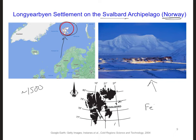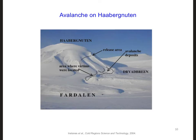On February 4th, 2001, two people traveling on snowmobiles between two settlements on Svalbard were reported missing just south of Langerbyen. Due to a lack of witnesses, winter darkness, and bad weather conditions, it wasn't until February 5th that Search and Rescue located an area with snowmobile tracks going into an avalanche area, but not coming out of it. This avalanche occurred on the east slope of the mountain Habergnoten, about 10 kilometers south of Langerbyen, depositing snow about 8 meters thick in an area more than 1,000 meters long and 100 to 200 meters wide.